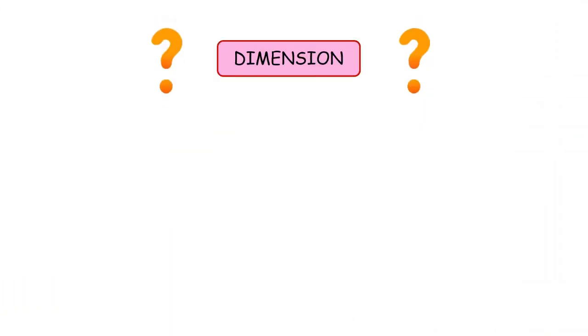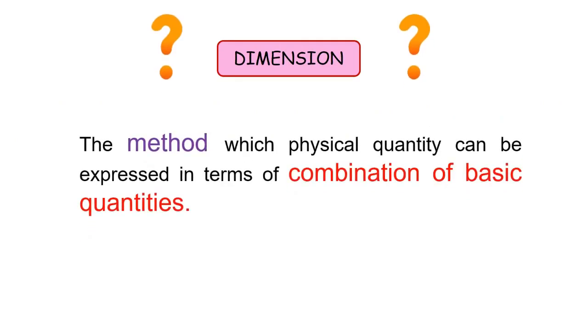Dimension is defined as the method by which physical quantity can be expressed in terms of combination of basic quantities.